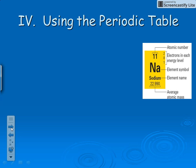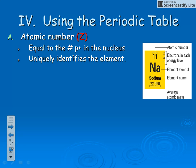When using the periodic table, your element symbol is shown along with an atomic number and average atomic mass. The atomic number, represented by capital Z, is equal to the number of protons in the nucleus. The proton uniquely identifies the element, so the atomic number uniquely identifies the element. Here, eleven is sodium's atomic number.